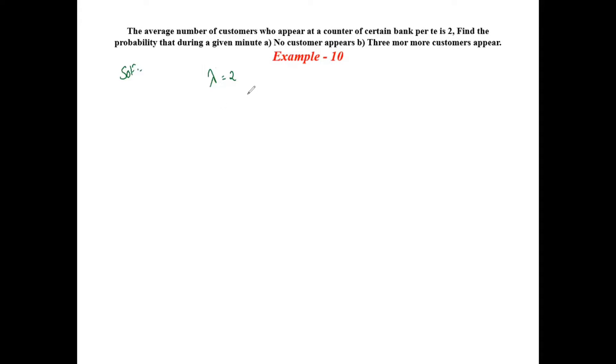The probability mass function can be given as e to the power minus lambda into lambda power x over x factorial. First, part (a) asks for the probability that no customer appears. This means probability X is equal to zero, so we have to find P(0).